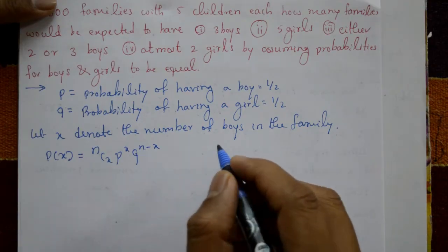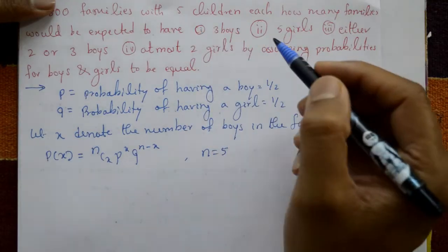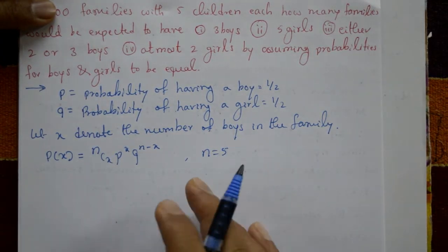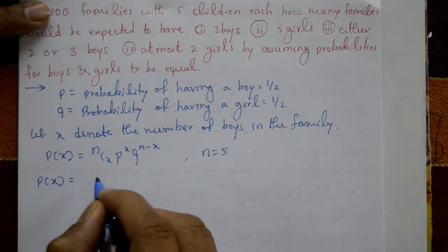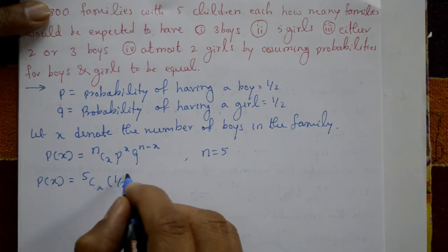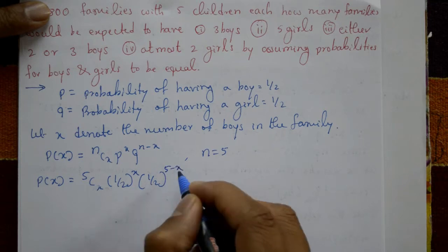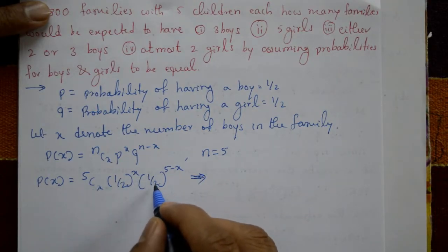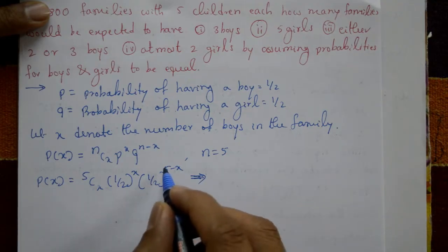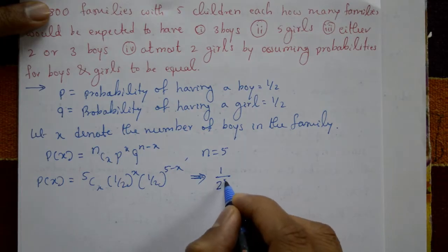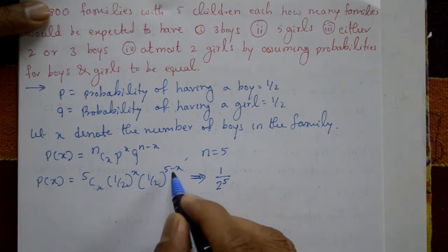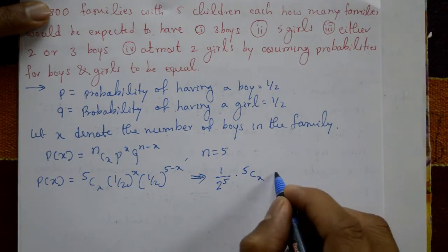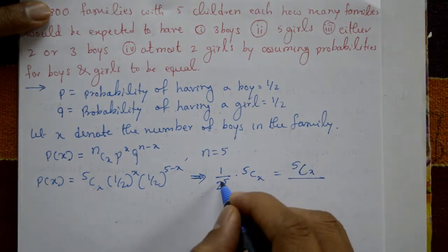Now n = 5, since one family has five children. p = 1/2 and q = 1/2. So P(X) = 5Cx × (1/2)^x × (1/2)^(5-x). Simplifying, this equals (1/2)^5 × 5Cx, which gives P(X) = 5Cx / 32.